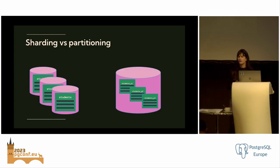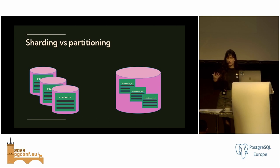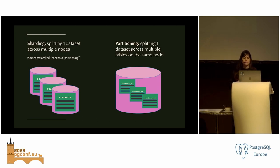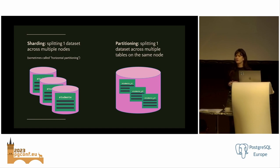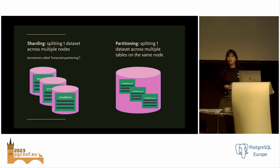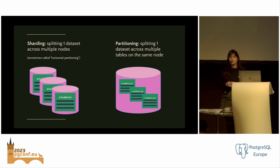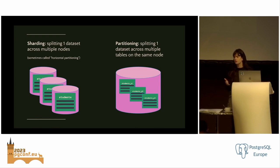Just to clarify partitioning versus sharding: sharding is an optimization of hardware, whereas partitioning is an optimization of software. Sharding splits one data set across multiple nodes — so three servers, roughly one-third of the data per server — giving you three times the CPU, RAM, etc. Partitioning splits the data set across multiple tables all on the same server. This removes some maintenance headaches from large tables, but does not increase physical availability of resources.